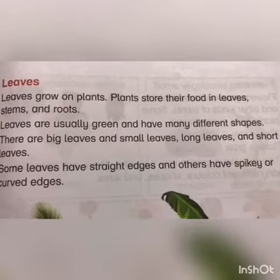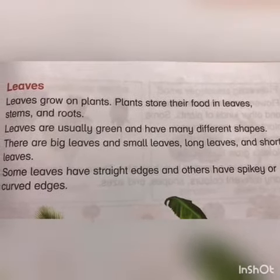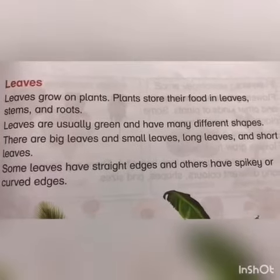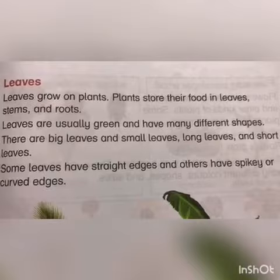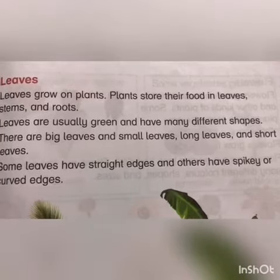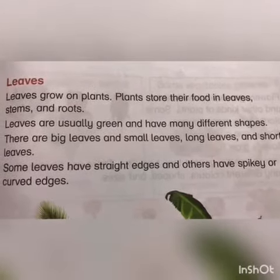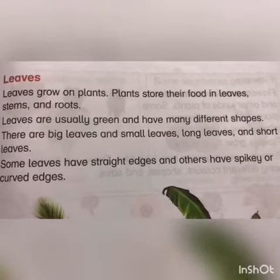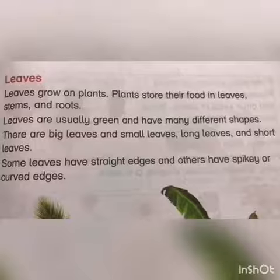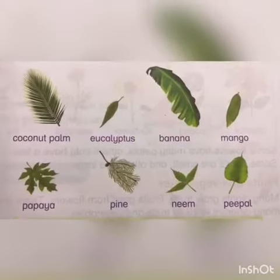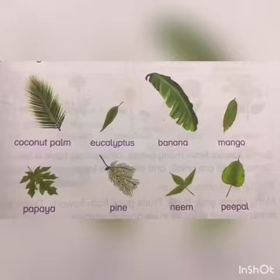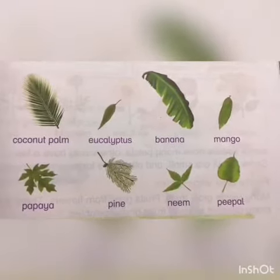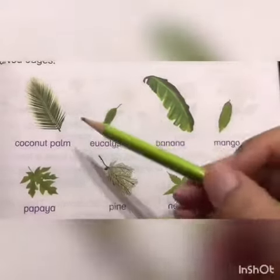Leaves grow on plants, and plants store their food in stems, roots, and leaves so they may get energy from it. Leaves are usually green in color and have many different shapes and sizes — some are big, some are small, some are long, and some are short. These are pictures of different shapes and sizes of leaves. Some leaves have spiky edges.